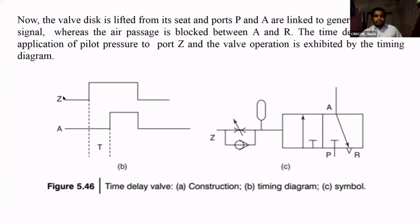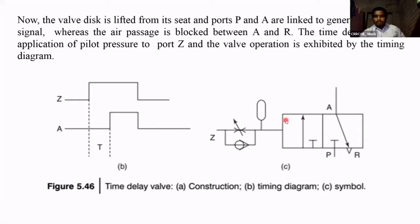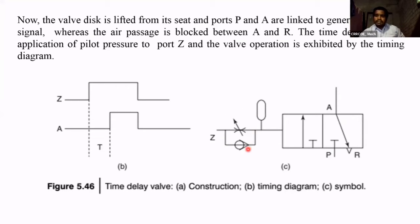This is called the time delay valve. The time delay diagram shows the pilot air and outlet port — there is a time delay between them. Based on this time delay, the valve is open or closed. We are setting that time. This is the symbol for the time delay valve. Z means the port for the pilot air. The pilot air operates the spool of the valve — it is operated by air, not manually. This circuit indicates the time delay circuit. This is the actual direction control valve, and this valve is controlled with the help of air from port Z, controlled by a time delay screw.